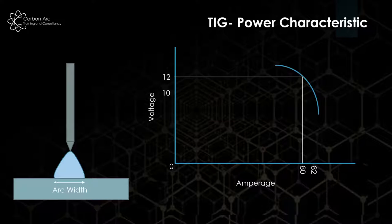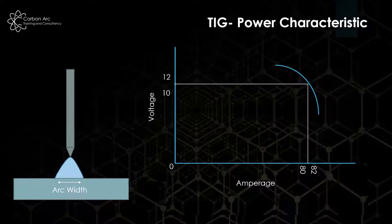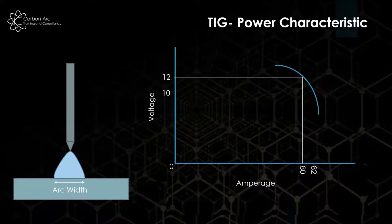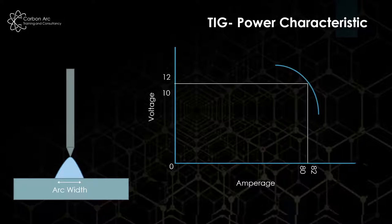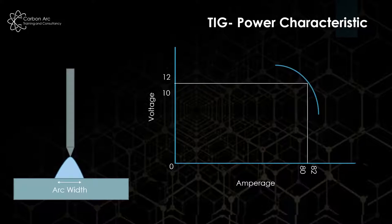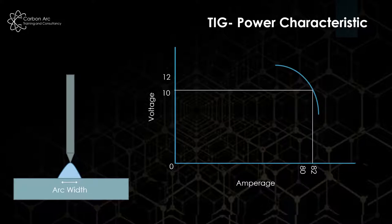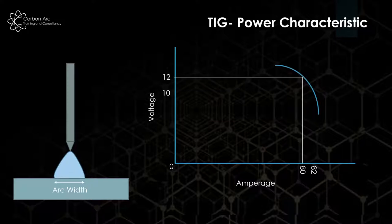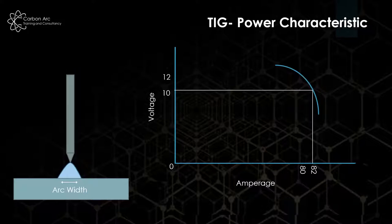The power characteristic used here is constant amperage or a drooping characteristic curve like with MMA. As I change my arc gap, voltage changes but the overall percentage change in amperage in comparison is not very much. This affects us with maintaining arc width as well as penetration depth if we do not have a constant arc gap while welding.